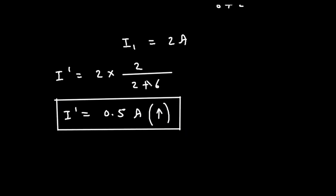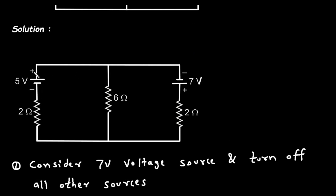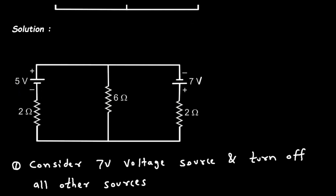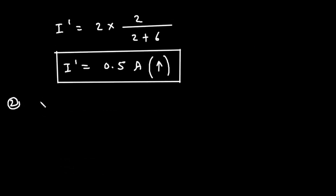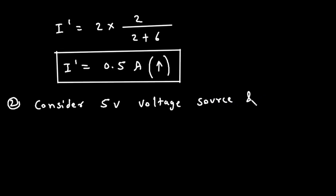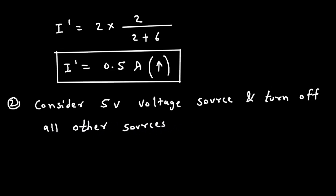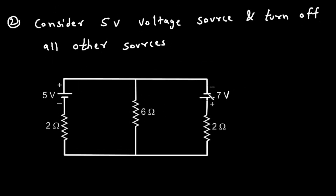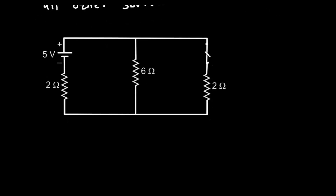We have found the value of I prime. Now step number 2: consider the 5V voltage source and turn off all other sources. When we turn off the 7V voltage source, we replace it by a short circuit. The positive polarity is here, so the direction of current will flow accordingly. Let's call this current I2, and the current through the 6 ohm resistor in this step is I double prime.